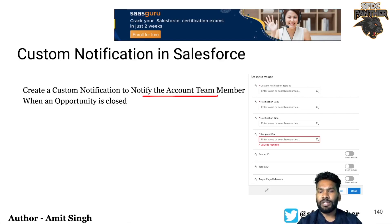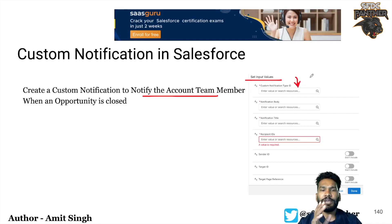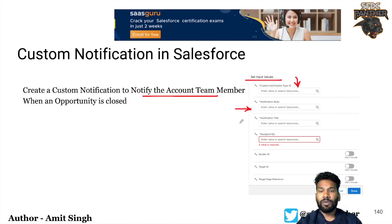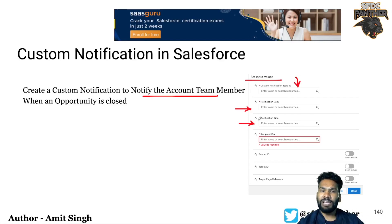On the right-hand side you can see the UI from Flow Builder that we will be using. The first field is the custom notification type ID — this is where we provide the ID of the custom notification we've developed. Then there's the notification body — what we want to put in the body, such as 'opportunity name has been closed'. The title could be something like 'opportunity name is closed' or 'time to celebrate'.